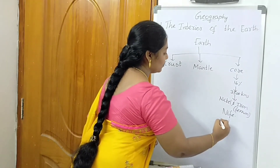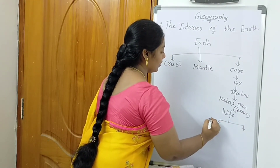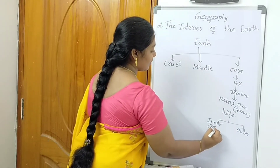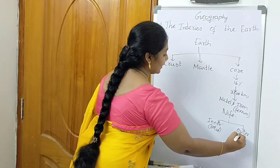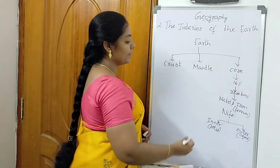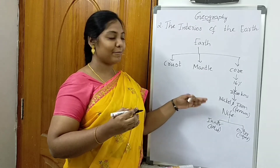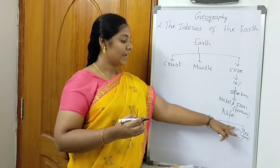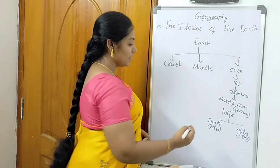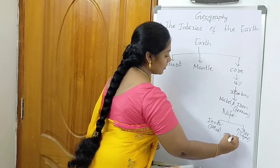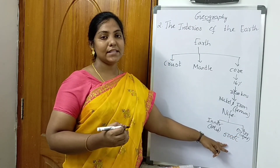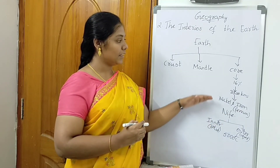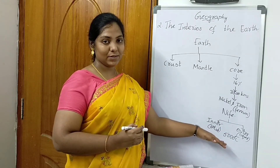This core is again divided into inner core and outer core. The inner core is solid in nature, and the outer core is liquid. As mentioned earlier, when the earth was formed, all the heavy particles moved to the center, forming a solid inner core. The temperature in the core is expected to be 5000 degrees Celsius, and the pressure there is also very high.